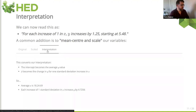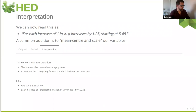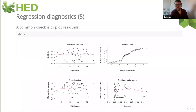So when you go through the slides, you can see that the intercept becomes our average y value, and the beta becomes the change for one standard deviation. Applying it to our model, the average y is 18.2, and each increase of one standard deviation increases y by 4.72. The very final thing: if we create a model like this, how do we know if it's rubbish? Because if it is, we don't really want to use it. One of the common things to do is to plot the residuals.